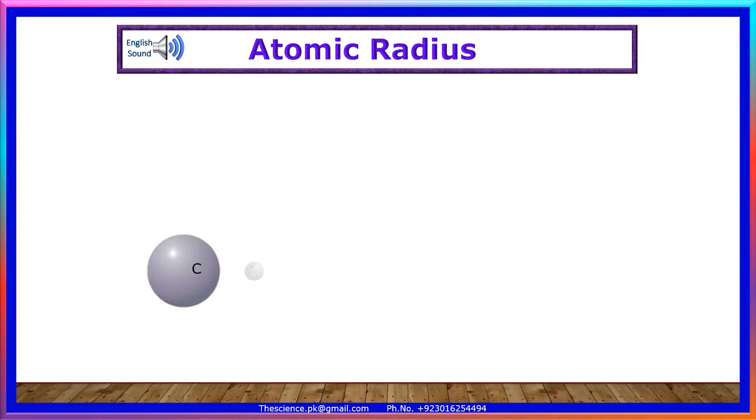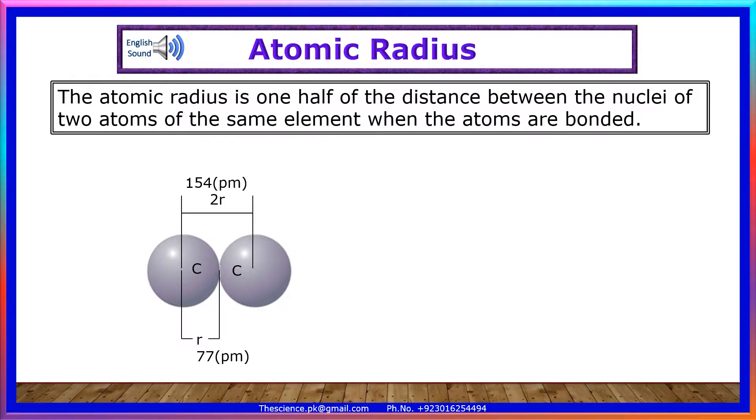Atomic radius. The atomic radius is one half of the distance between the nuclei of two atoms of the same element when the atoms are bonded.